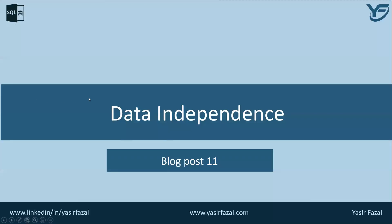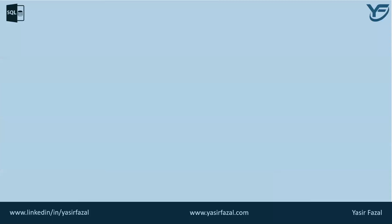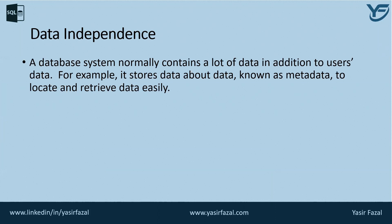Welcome to blog post 11. In this blog post I'm going to discuss about data independence. A database system normally contains a lot of data, including data about the data known as metadata, used to locate and retrieve data easily. It is rather difficult to modify or update metadata once stored in the database, but as the DBMS expands it needs to change over time to satisfy user requirements. If the entire data is not independent, it would become a tedious and highly complex job.